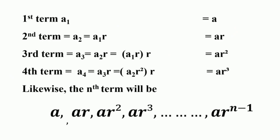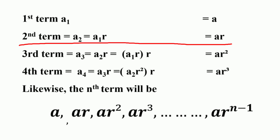Now look at the general form of a geometric progression. Let us consider a geometric progression A1, A2, A3 up to AN, with first term as a non-zero term A and a common ratio R. Here the first term A1 is equal to A. The second term is obtained by multiplying the first term by the common ratio R, so A2 equals A1 times R, which equals AR.